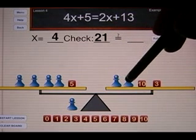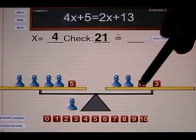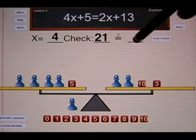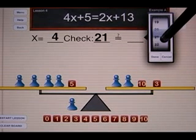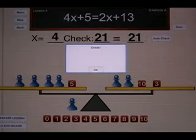And on the right side, I have 4 and 4 is 8. And 10 is 18. And 3 is 21. So both sides do have the same value.